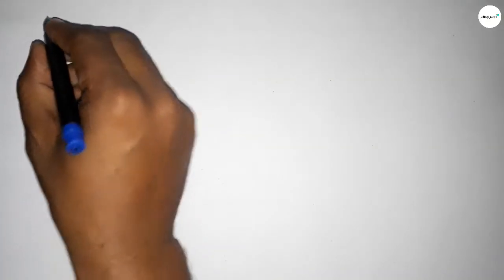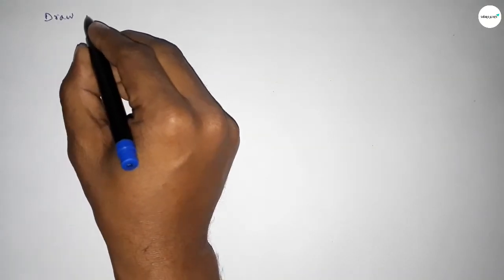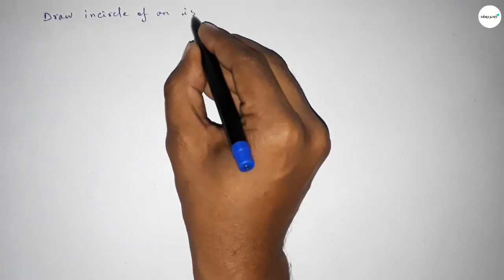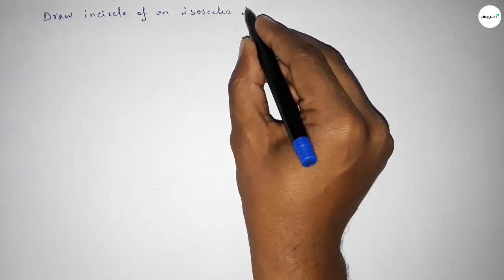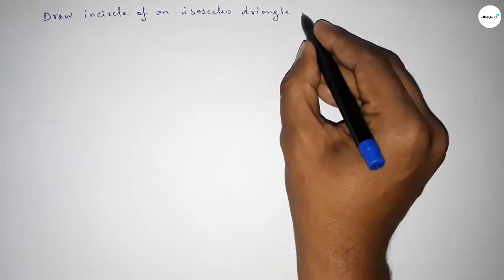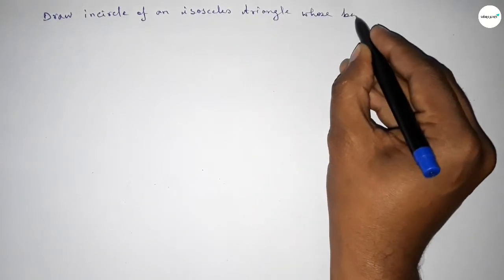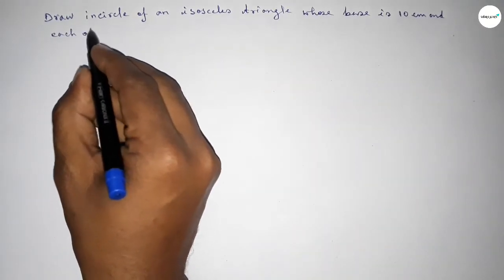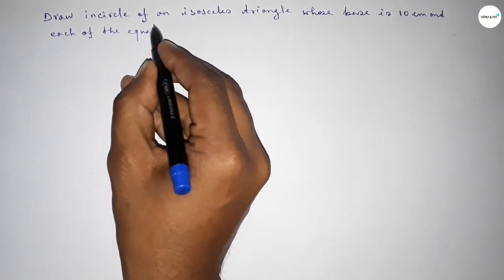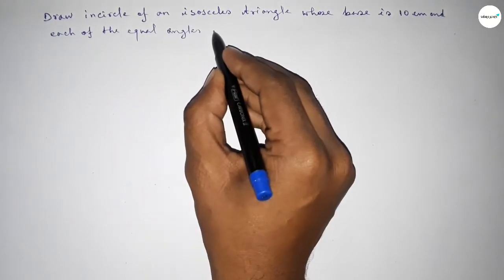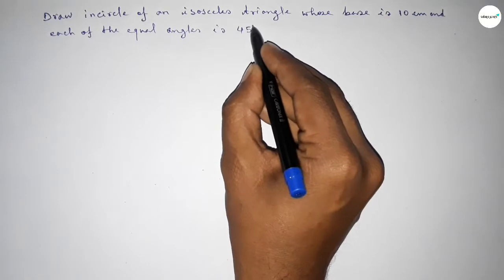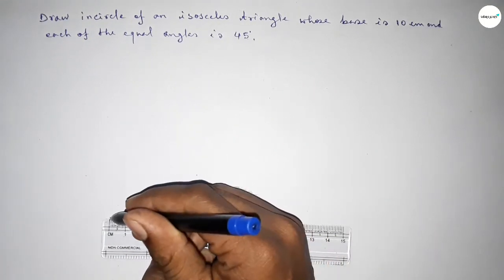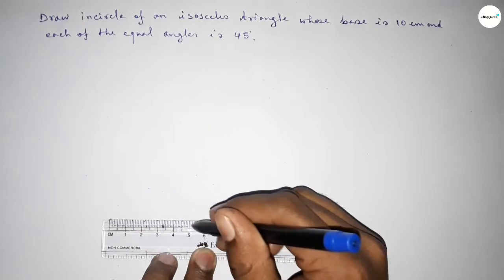Hi everyone, welcome to SI Chair Classes. Today in this video we have to draw the incircle of an isosceles triangle whose base is 10 centimeters and the corresponding equal angles are 45 degrees. So constructing the incircle of an isosceles triangle — let's start the video. First of all, drawing the base of 10 centimeters.